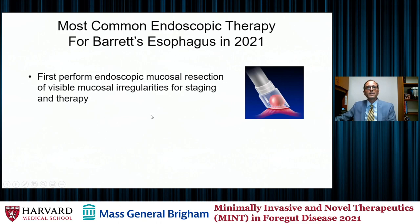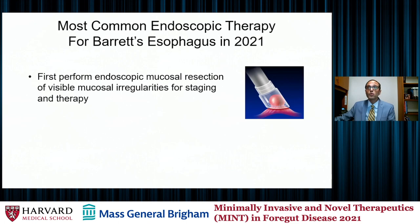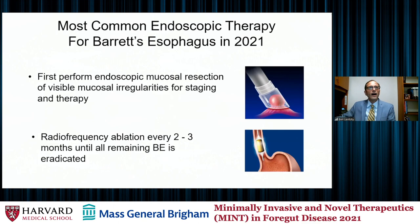The most common approach to managing patients with Barrett's esophagus in 2021 is: first, very carefully visualize the mucosa endoscopically. If you see a visible mucosal irregularity, proceed with endoscopic mucosal resection — this will stage the most visually advanced lesion and provide therapy, removing the most advanced disease en-bloc. Following resection of all visible mucosal irregularities, you can then come back and use radiofrequency ablation every two to three months, allowing time for the site to heal between RFA sessions, until all remaining Barrett's-type epithelium is eradicated.